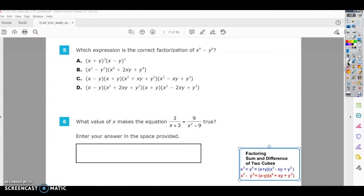Okay, so this is number 5 on the Algebra 2 practice test, and it says which expression is the correct factorization of x to the 6th minus y to the 6th.